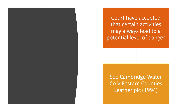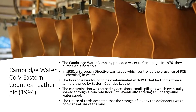The courts have accepted that certain activities will always lead to a potential level of danger. In Cambridge Water Company v Eastern Counties Leather, the company provided water to Cambridge and in 1976 purchased a borehole. In 1980, a European directive controlled the presence of PCE — a toxic chemical — in water, and the borehole was found to be contaminated with PCE from a tannery owned by Eastern Counties Leather. The contamination was caused by occasional small spillages which soaked through a concrete floor and eventually entered the underground water supply. The House of Lords accepted that the storage of PCE was a non-natural use of the land.